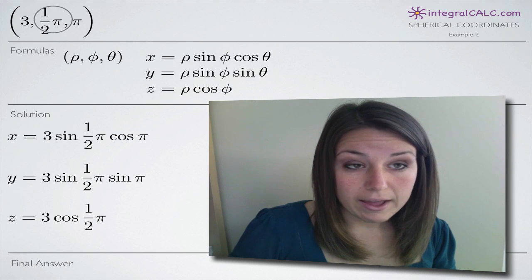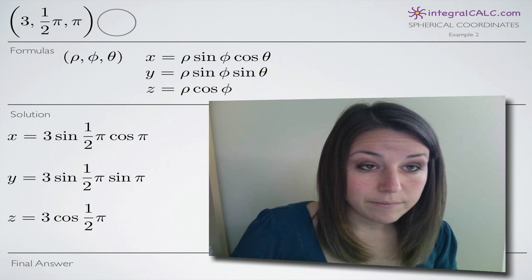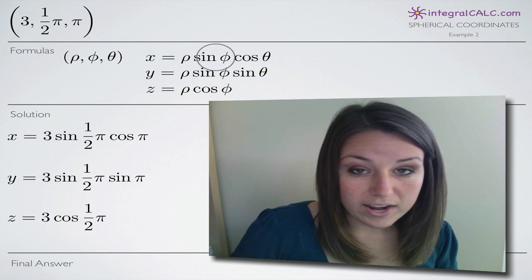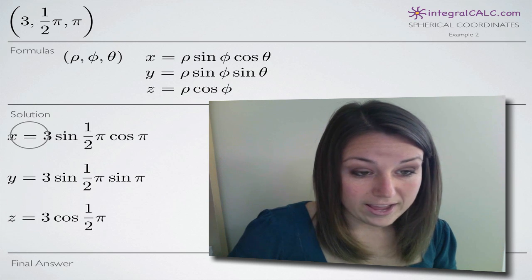We're going to plug in one half pi for phi, here, here, and here. And we're going to plug in pi for theta, here and here. And that gives us these three equations for x, y, and z.